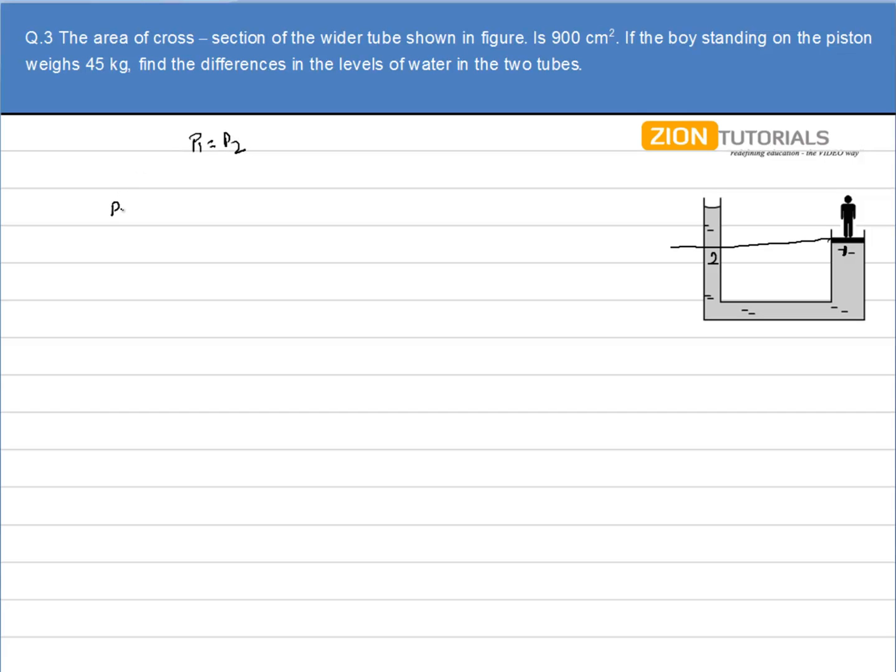We calculate the pressure at point 1. That will give force upon area. The force is due to the weight of the person, so it will be equal to mg by area.